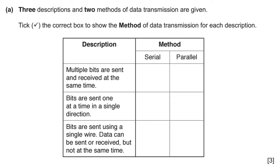Three descriptions and two methods of data transmission are given. Multiple bits are sent and received at the same time — that is parallel. Bits are sent one at a time in a single direction — that is serial. Bits are sent using a single wire and data can be sent or received but not at the same time — that is also serial data transmission.